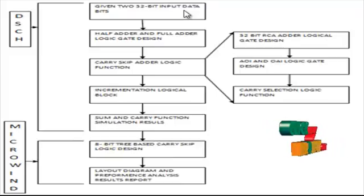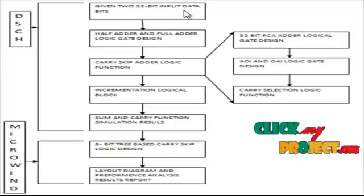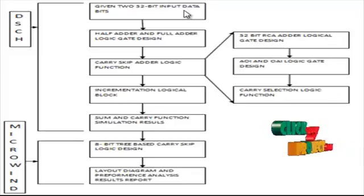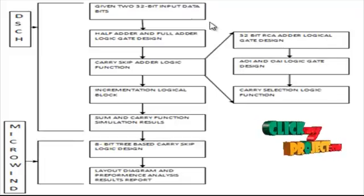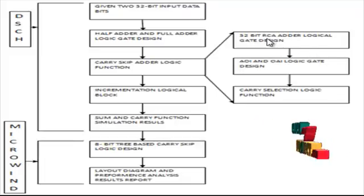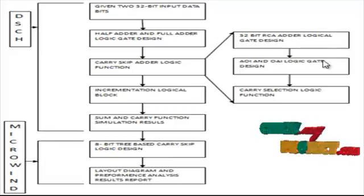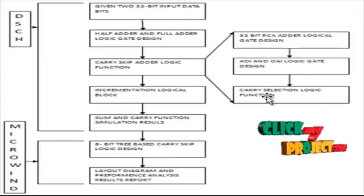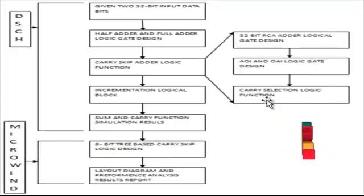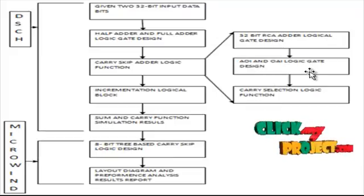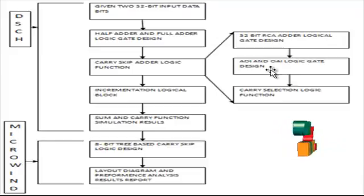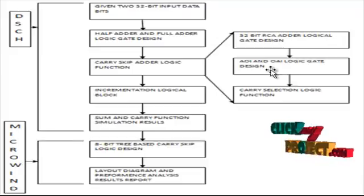We design a 32-bit input data bits based adder architecture. We apply half adder and full adder designs for the basic logic gate elements. We develop the carry skip adder logic using a 32-bit ripple carry adder for gate-level addition, along with the carry selection process. We apply even and odd mode selection for the carry selection and skipping logic function.